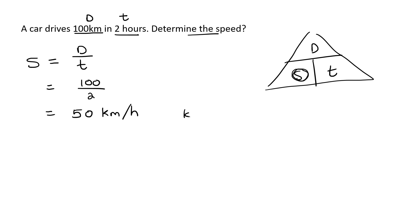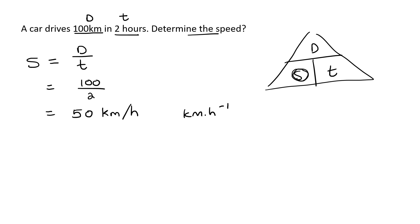Your teacher might write kilometers per hour in different ways, but usually it'll be like that. When you give your answer, don't just say 50 — 50 what? Some teachers get very particular about this. 50 apples? 50 bananas? No — 50 kilometers per hour.